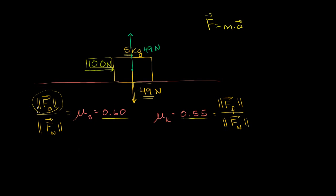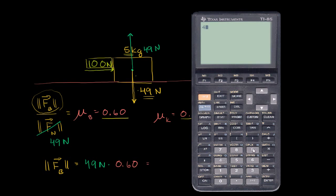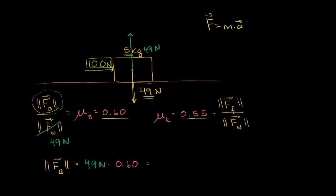The magnitude of the budging force divided by the normal force — which is 49 newtons — equals 0.60. So the budging force equals 49 newtons times 0.60. Coefficients of friction are unitless, so the result is still in newtons. Using a calculator: 49 times 0.6 gives us 29.4 newtons. That is the force necessary to overcome static friction.